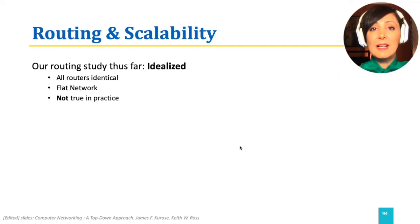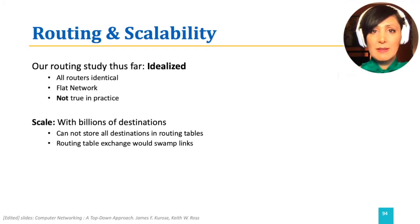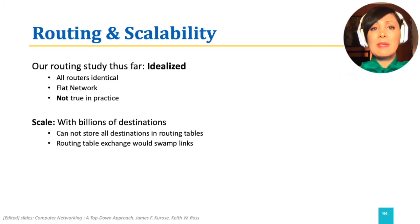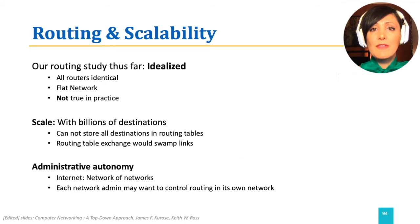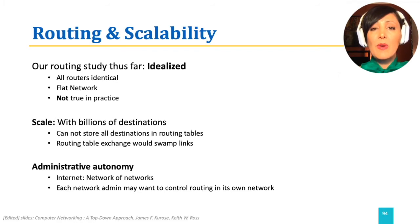At Internet scale, we have billions of nodes and destinations, so a link state protocol cannot save all the path information in each of the routers in such a network. A distance vector algorithm might also never converge given the dynamics of such a complex network. On the other hand, the Internet is a network of networks. ISPs may not want to give full access or full information of their networks to others, and each network administrator may want to control the routing within its domain.